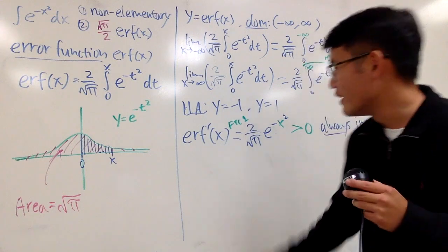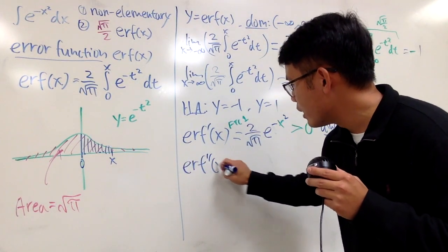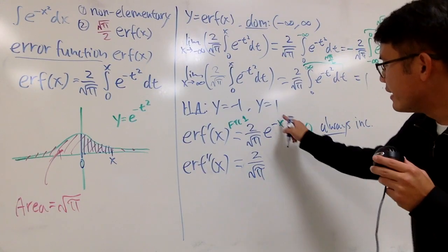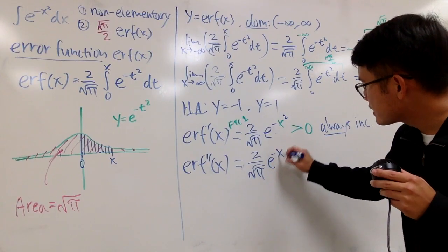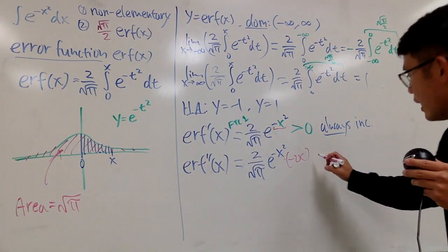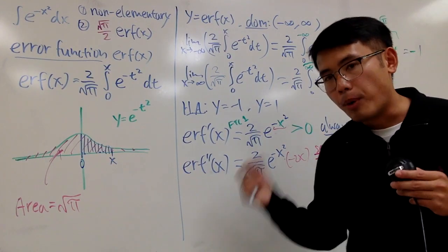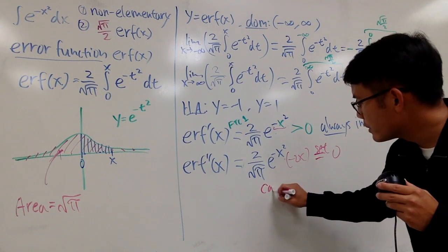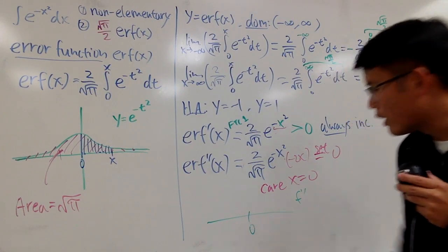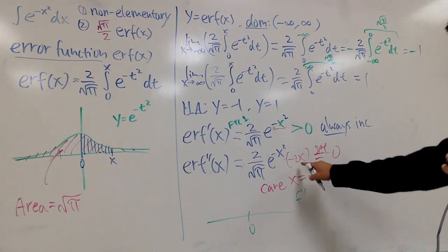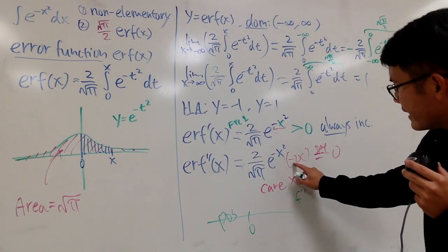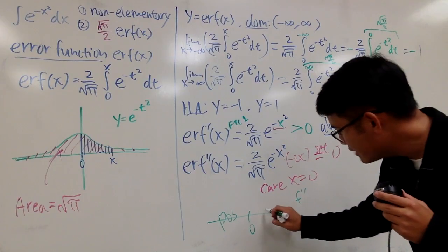Now let's move on to the second derivative: erf prime prime of x. We differentiate e to the negative x squared — keeping the constant multiple 2 over square root of pi — and using the chain rule, we get 2 over square root of pi times e to the negative x squared times negative 2x. Setting this to zero, the only solution is x equals 0, so we care about x equals 0. Picking x equals negative 17: negative 2 times negative 17 is positive, times the rest positive, so the second derivative is positive. Picking x equals 25: negative 2 times 25 is negative, so the second derivative is negative.